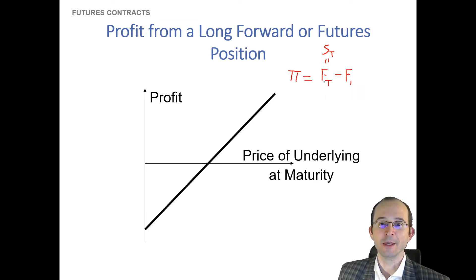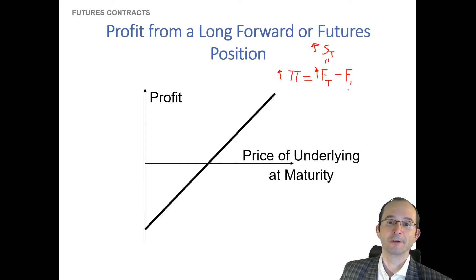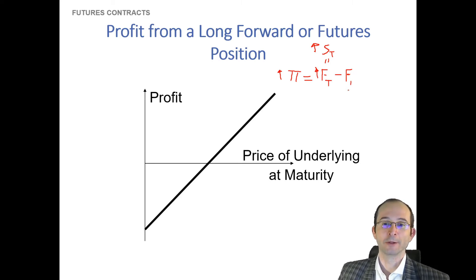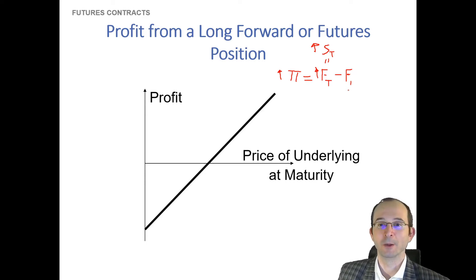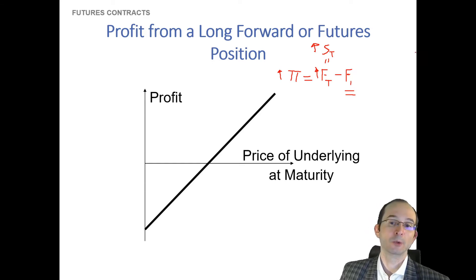As the price of the underlying at maturity — which is the spot price — rises, that means that the futures price at maturity also rises, which means that the payoff to the long position also rises. And analogously, if the price falls, then the futures price at maturity falls, and therefore the profit to the long position falls as well. Because you're receiving that underlying asset and the spot market tells you what it's worth right now. If its price in the spot market rises, that's good for you because you're receiving something more valuable at a price you've already previously agreed, which won't change. If the spot market tells you this asset is now less valuable, its price has actually fallen, then the profit to you from this futures or forward contract is now lower or perhaps negative.